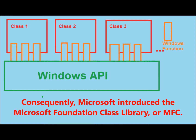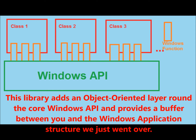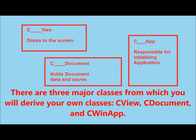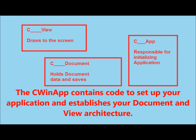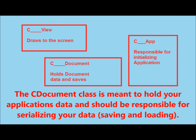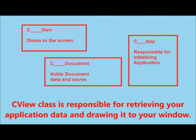Consequently, Microsoft introduced the Microsoft Foundation Class Library, or MFC. This library adds an object-oriented layer around the core Windows API and provides a buffer between you and the Windows application structure we just went over. There are three major classes from which you will derive your own classes: CView, CDocument, and CWinApp. The CWinApp contains code to set up your application and establishes your document and view architecture. The CDocument class is meant to hold your application's data and should be responsible for serializing your data — saving and loading. The CView class is responsible for retrieving your application data and drawing it to your window.